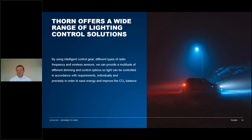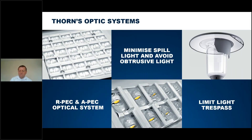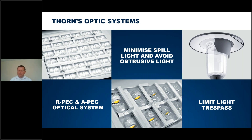Not just with lighting controls, but also with optics. We have to control the light and make sure it goes where we want it. We have different optics — RPEC and APEC, which stand for road and area — and within that there are different lighting distributions. Don't fall into the trap of always using the solution you understand. Every solution is good in some situations and a compromise in others. Make sure you use the right optical system for the right situation, because if you do that you'll minimise spill light and avoid obtrusive light.